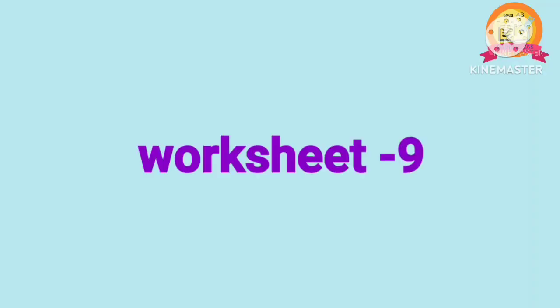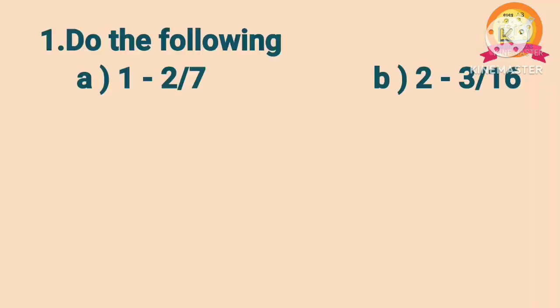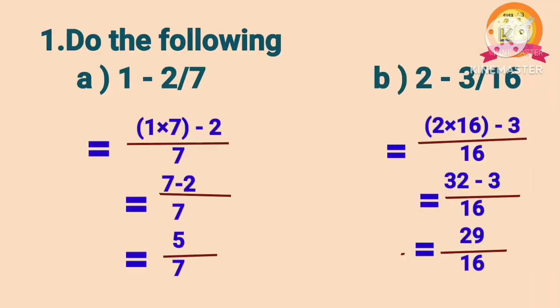Worksheet 9. First Roman: Problem A: 1 minus 2 by 7. After calculation, we get 5 by 7. Problem B: 2 minus 3 by 16. After calculation, we get 29 by 16.